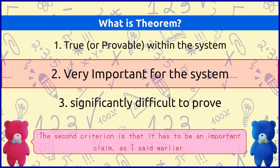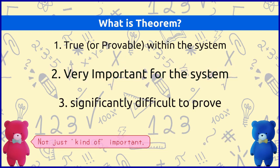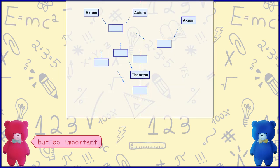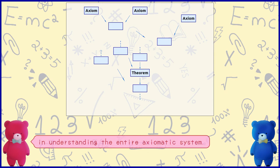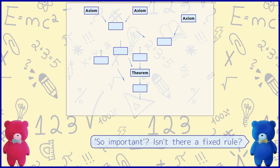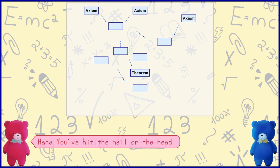Exactly. The second criterion is that it has to be an important claim, as I said earlier. Not just kind of important, but so important that it becomes a key point in understanding the entire axiomatic system. So important. Isn't there a fixed rule? You've hit the nail on the head. As I said before, the word theorem basically means an important claim.